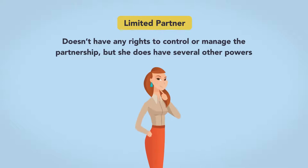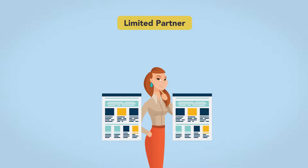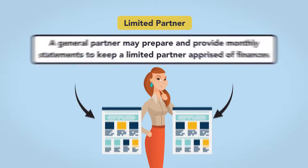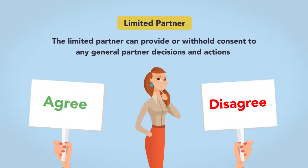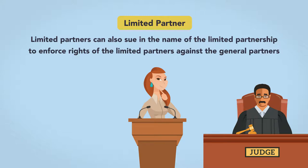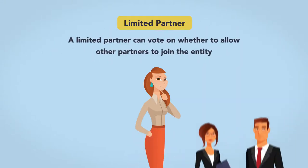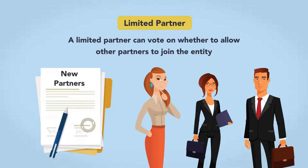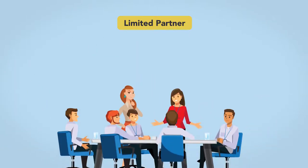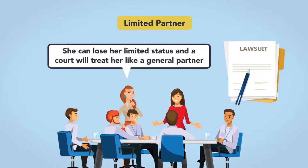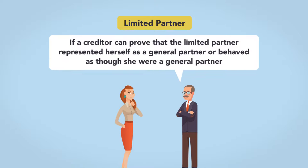The limited partner doesn't have rights to control or manage the partnership, but she does have several other powers. First, she has the right to receive information about the partnership. Second, the limited partner can provide or withhold consent to any general partner decisions and actions. Third, limited partners can sue in the name of the limited partnership to enforce rights of the limited partners against the general partners. Finally, a limited partner can vote on whether to allow other partners to join the entity. New partners, whether limited or general, may only be admitted with the written consent of all partners. If the limited partner is actively participating in management, she can lose her limited status and a court will treat her like a general partner.